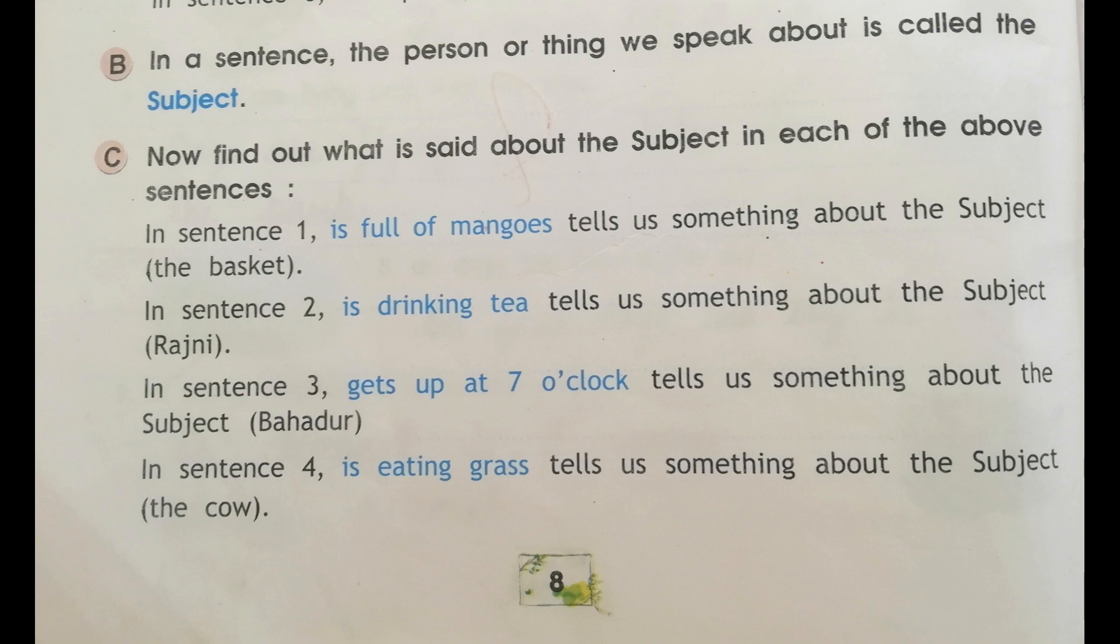Now find out what is said about the subject in each of the above sentences. In sentence 1, 'is full of mangoes' tells us something about the subject, the basket. In sentence 2, 'is drinking tea' tells us something about the subject, Rajni. Who is drinking tea? Rajni is drinking tea. In sentence 3, 'gets up at 7 o'clock' tells us something about the subject, Bahadur.